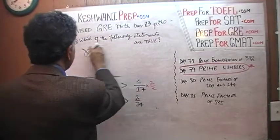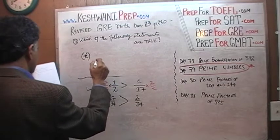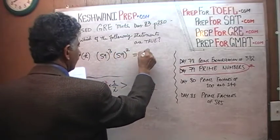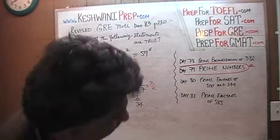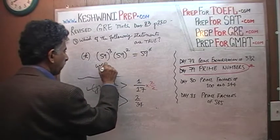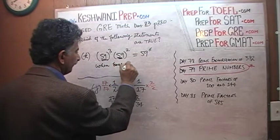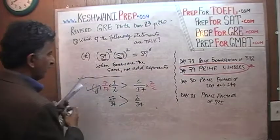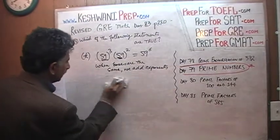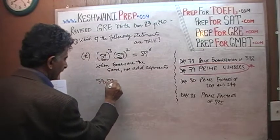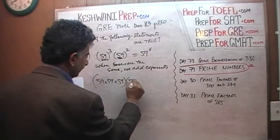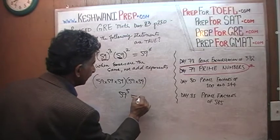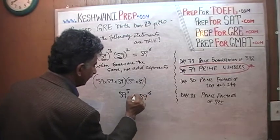Statement K: 59 to the 3rd times 59 to the 2nd power equals 59 to the 6th. When the bases are the same, we add the exponents. 59 cubed is 59 times 59 times 59, and 59 squared is 59 times 59 — so we have five 59s being multiplied, which is 59 to the 5th power. That does not equal 59 to the 6th power. This is false.